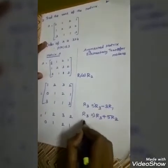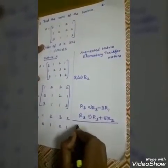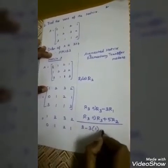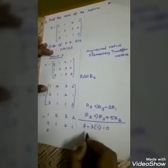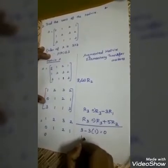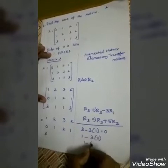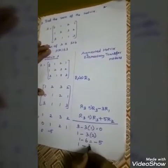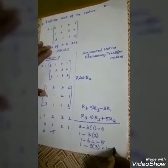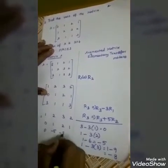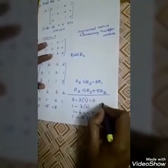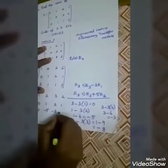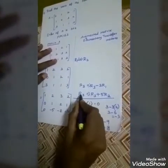I am doing R3 minus 3R1. First R3 element: 3 minus 3×1 equals 0. Next element: 1 minus 3×2 equals 1 minus 6 equals minus 5. Next element: 1 minus 3×3 equals 1 minus 9 equals minus 8. Next element: 3 minus 3×2 equals 3 minus 6 equals minus 3. This step is completed.